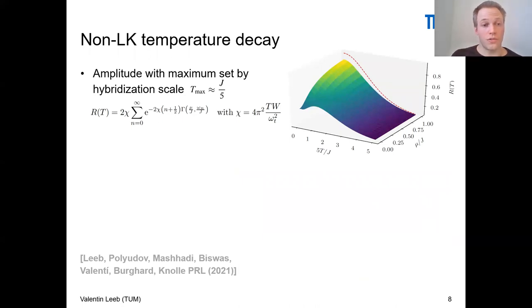This amplitude R(T) is actually a quite complex formula which you can see here on the left hand side. But for convenience, I've plotted it in this 3D diagram on the right hand side. On the x-axis, you can see temperature in units of the hybridization scale or the Kondo coupling. On the right hand side, you can see the chemical potential deviation in units of the hybridization scale. I would like to stress that it is a chemical potential deviation, because μ should be really seen as the deviation to the effectively flat band at the Fermi energy.